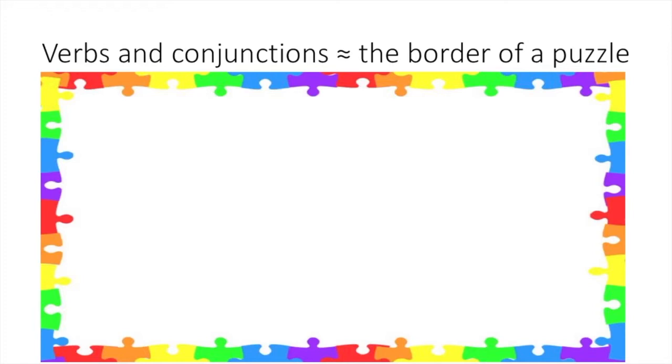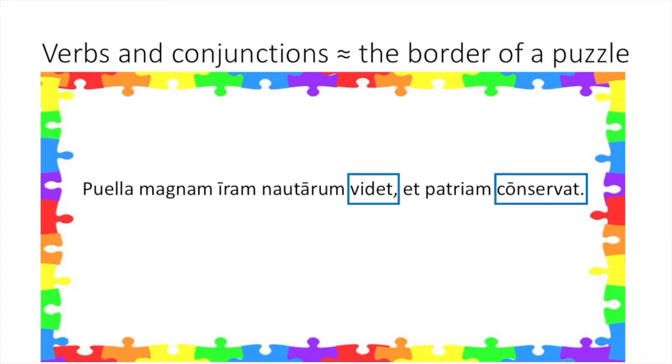This is helpful because you cannot steal words from one clause to translate another clause, except for a subject or verb that is not repeated in one of the nearby clauses. For example, let's look at the sentence. There are two verbs here, so there must be two clauses. The comma and the conjunction help us determine where to separate the two clauses. We should not use to translate the second clause, or to translate the first clause. This helps us arrive at our translation.